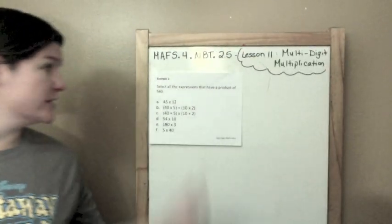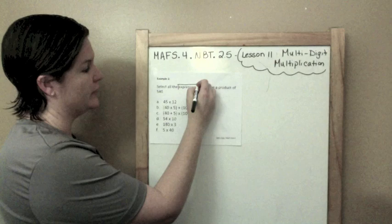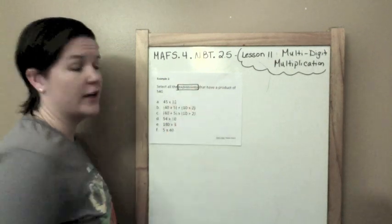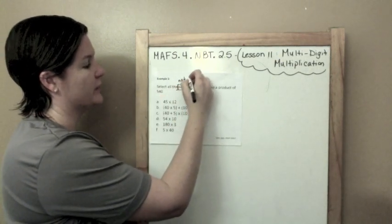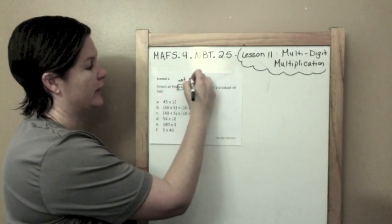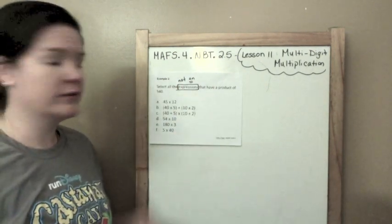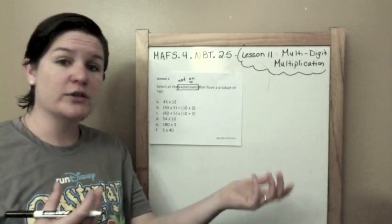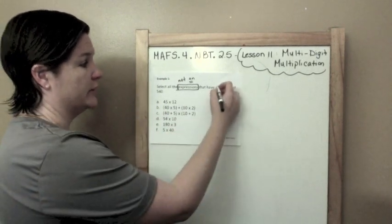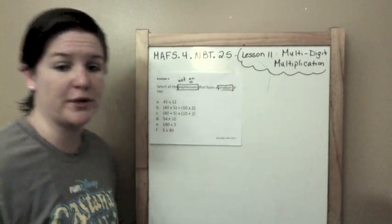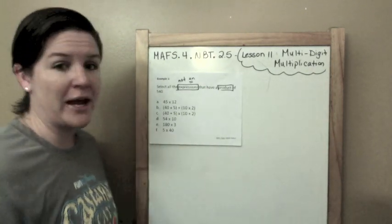Example 2. Select all the expressions that have a product of 540. Let's talk about this word, expressions. Expressions, it's work that you're doing, but it does not have an equal sign. There's not an equal sign. So you're just doing this work, but there's no equal sign. That's the difference between an expression and an equation. An equation has an equal sign. So, select all of these expressions that have a product, we just learned about that word, that's our answer to a multiplication problem of 540.